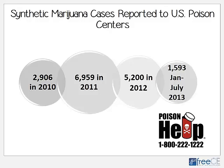2010 was the first year that poison centers were getting calls about synthetic marijuana — 2,906 cases in 2010. In 2011, that jumped up to just under 7,000 cases. It dropped to 5,200 cases in 2012, and between January and July of 2013, poison centers received just under 1,600 cases. There are various theories as to why the number of calls has decreased. It could be because of decreased usage as dangers became known, or because healthcare professionals are more familiar with these drugs now and know how to treat them without calling poison centers.